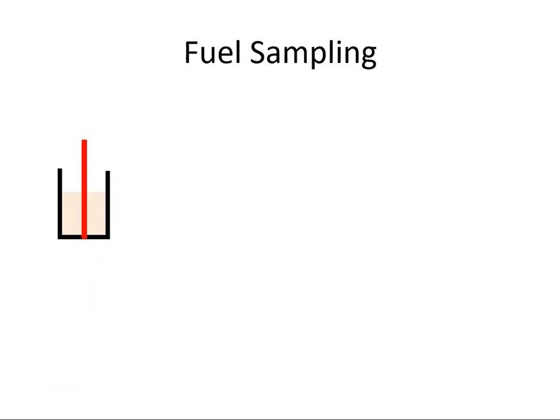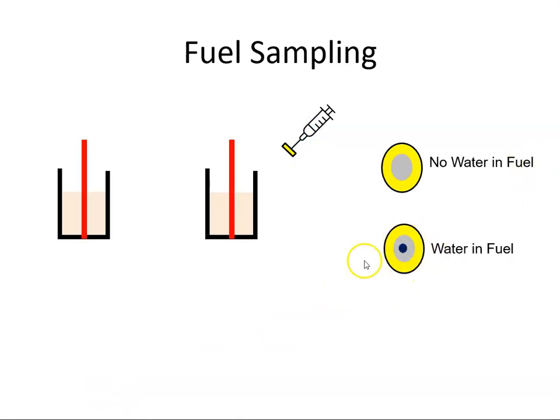If there was no visual indication of water in the fuel, you can do another test with a syringe and a water detection capsule. Put the detection capsule onto the syringe and then into the sample jar. Mix it around and draw the fuel through the capsule into the syringe. If there was any water in the fuel, there will be a dark blue discoloration on the capsule. If there was no water, there would be no discoloration.